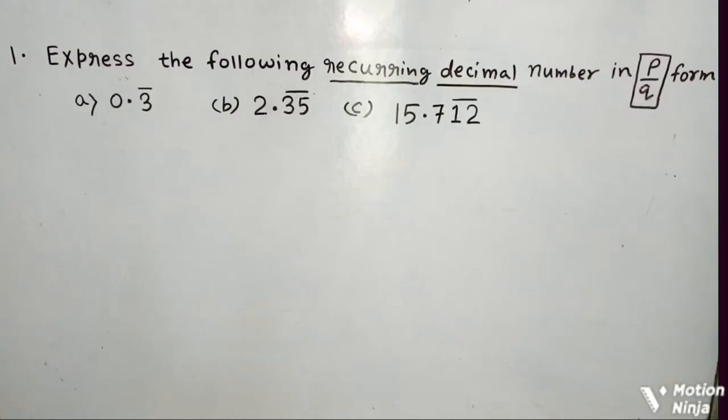Hello friends. Today we are going to learn a very important topic from the chapter on number systems: the conversion of a pure recurring decimal number to the form p by q.